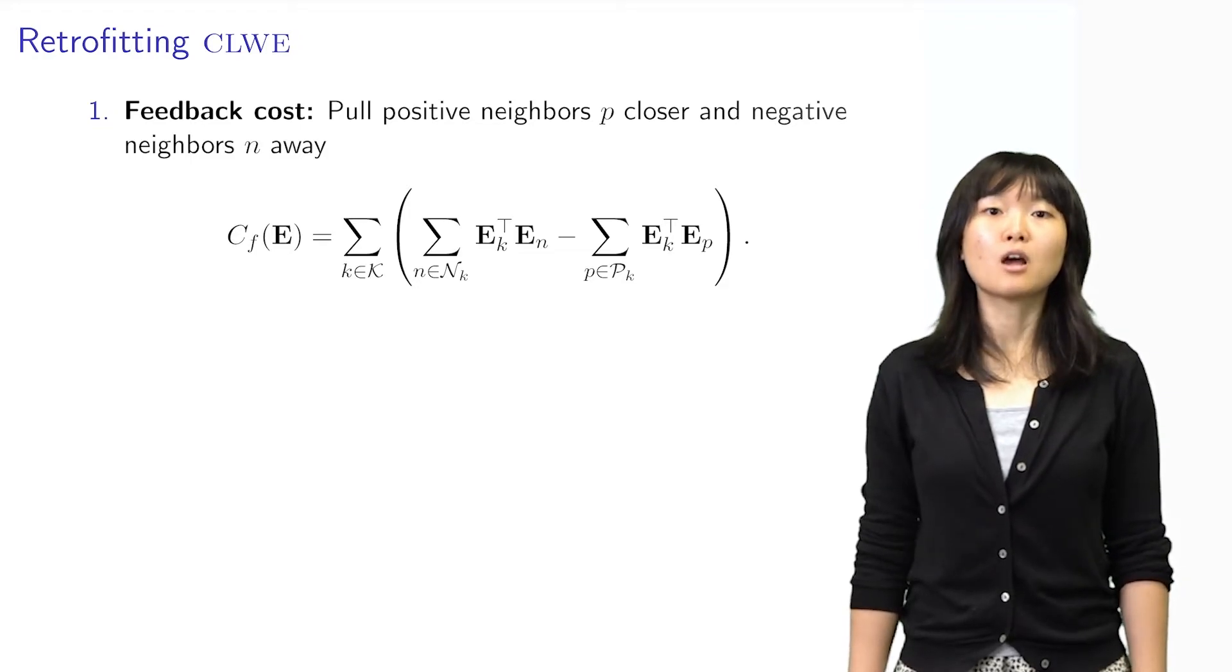In this equation, we pull positive neighbors P closer to keyword K and push negative neighbors N away from keyword K.